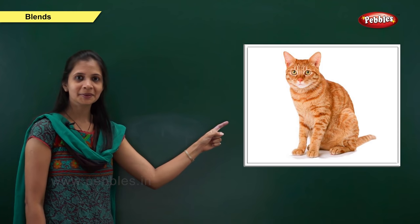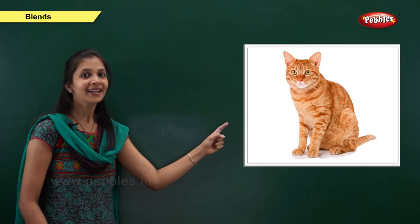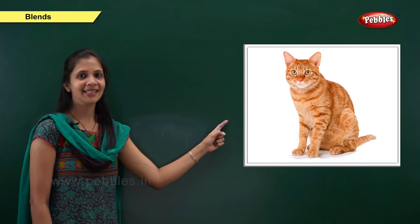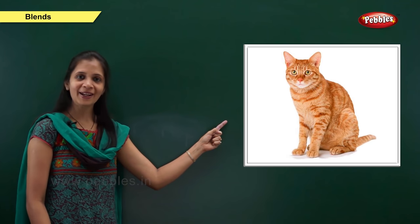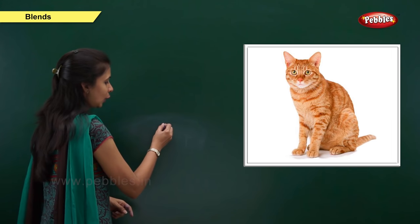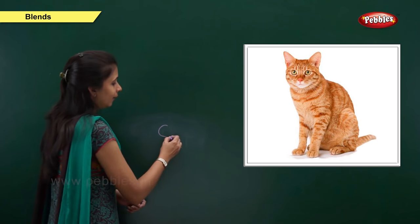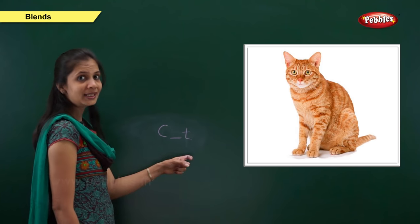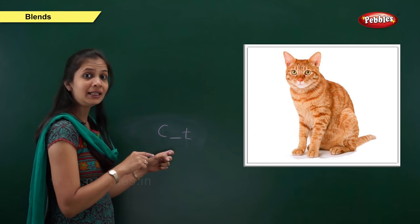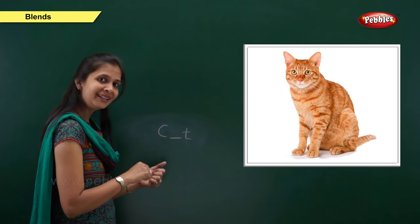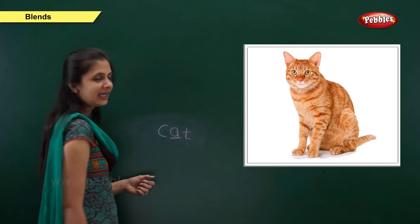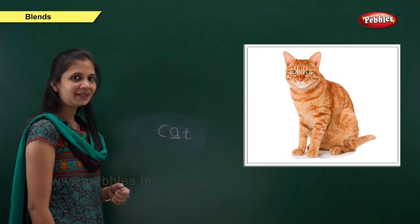Next one. Which picture is this? Yes, it is cat. Now, what is the sound of this word? It is ca, a, ta — cat. When the soft 'ca' is there, the letter is c. When the 't' sound is there, the letter is t. What about the middle sound? Middle sound is 'a'. Which vowel comes here? It is a. Very good. C, a, t — cat.